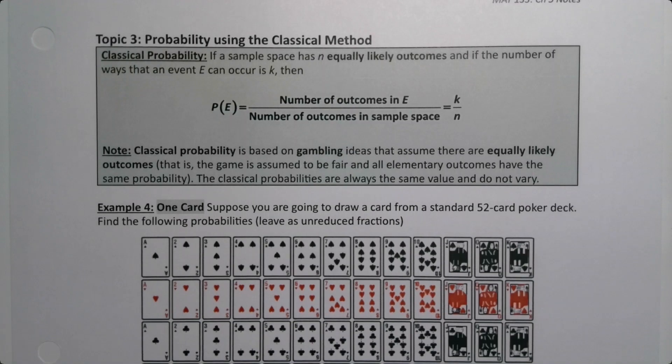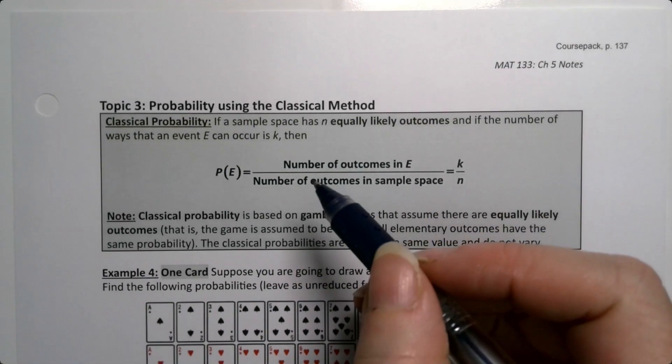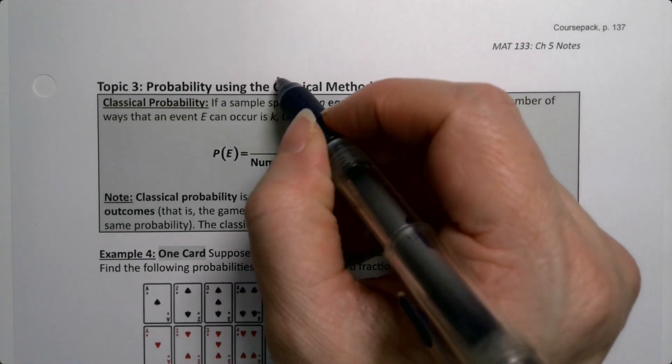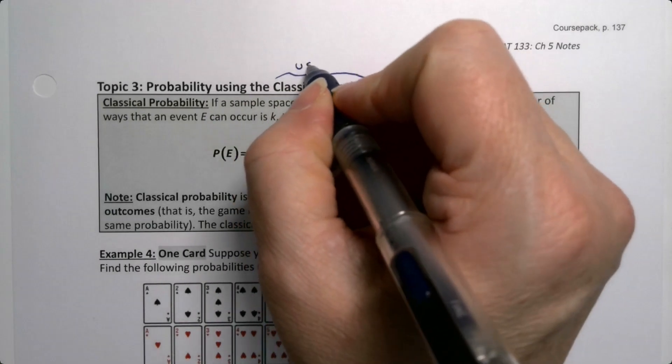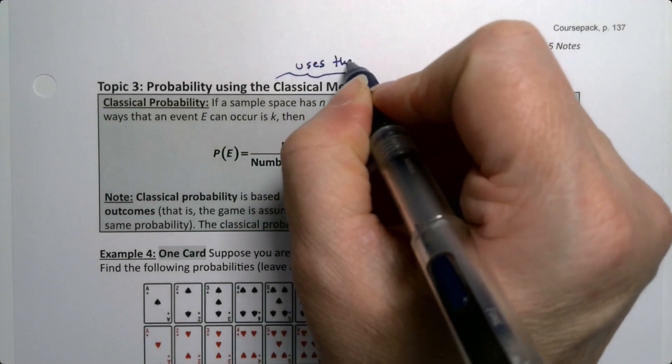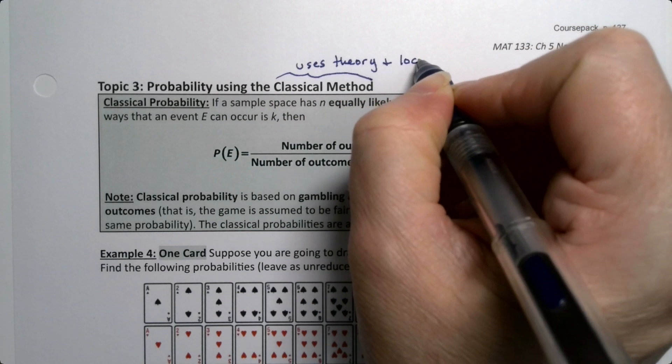The second method available to us to find probabilities is the classical method. We're going to use this one and the empirical one a lot. So the classical method uses theory and logic, not experimentation.